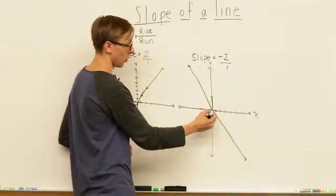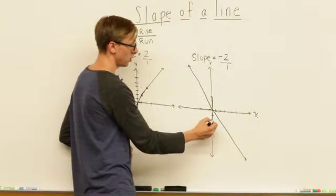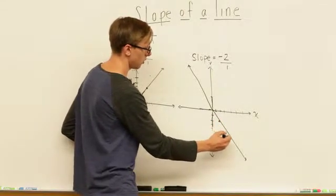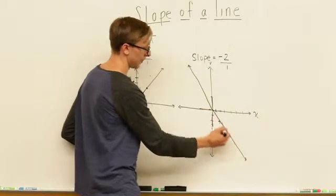So here we're going to go down 2 over 1, down 2 over 1, and we're going to get that negative slope.